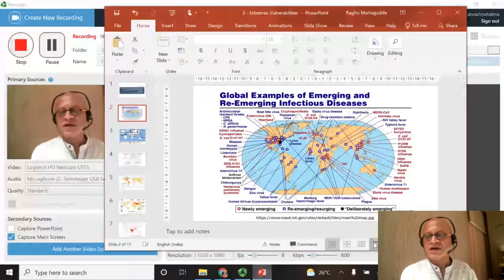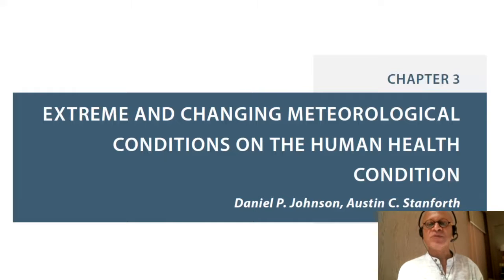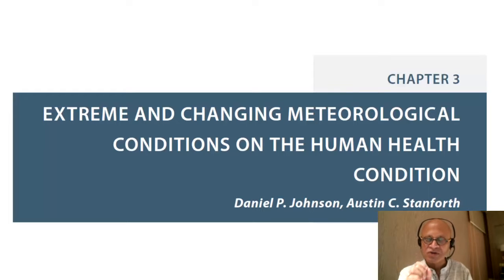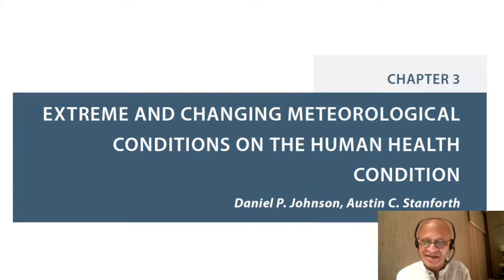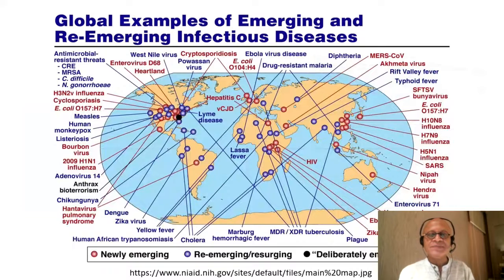Let's revisit some of the extreme meteorological conditions and their impacts on human health. When we say human health condition, we are talking about physical and socioeconomic vulnerabilities, which are essentially very local. You can look at global maps, but we have to zoom in and compute risks and vulnerabilities at very local scales where action needs to be taken to manage health disasters.